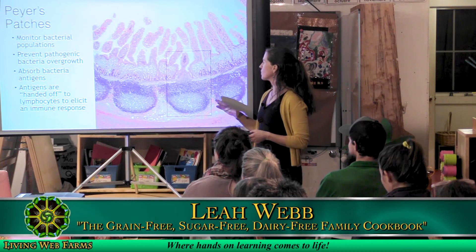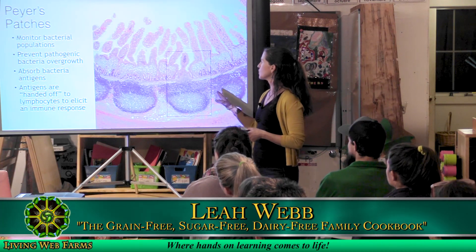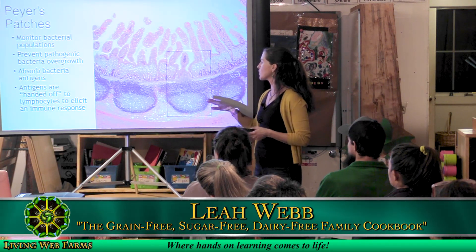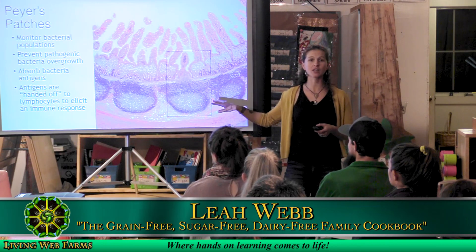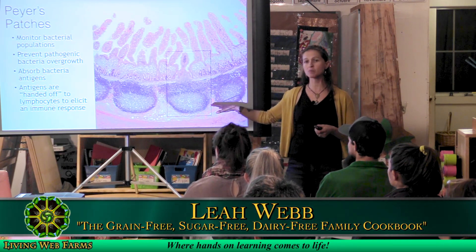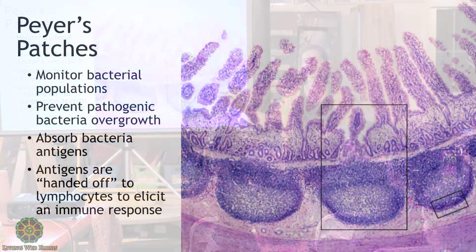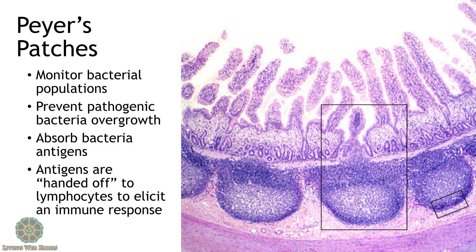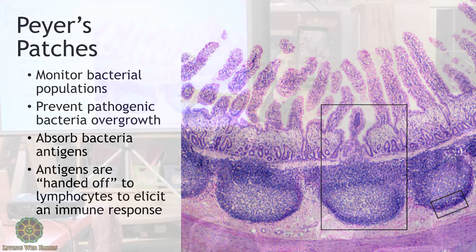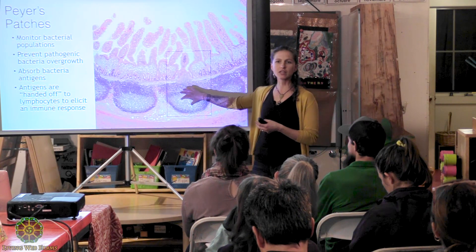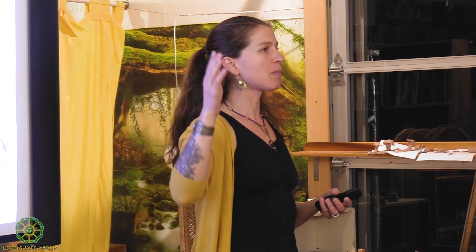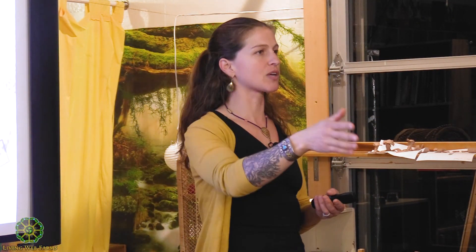This is a physical example of where you have lymph tissue that lines the gut. This is something called a Peyer's patch, and it is structurally similar to your tonsils. These patches are clusters of immune cells in your gut, and they are monitoring the bacteria population that's passing through your gut.